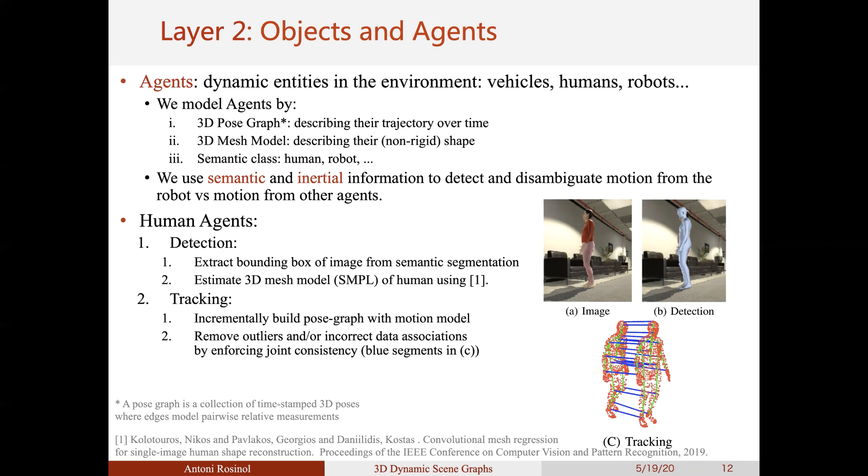We first detect a human by extracting a bounding box of the RGB image from the semantic segmentation. Then, we use a graph neural network from Professor Costa's group that infers an approximate 3D mesh model. While this approach works well given an approximately clean 2D bounding box of the human, it sometimes returns wrong estimates that we must deal with when tracking humans.